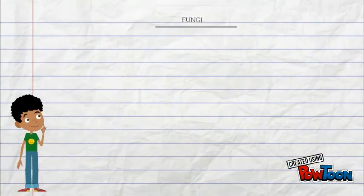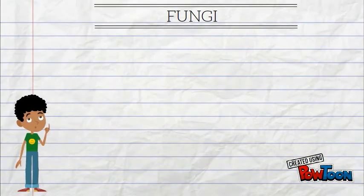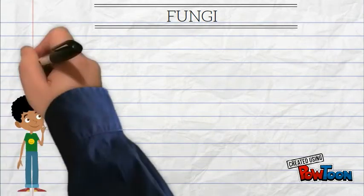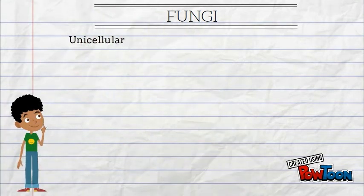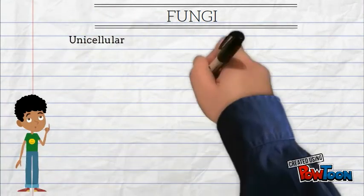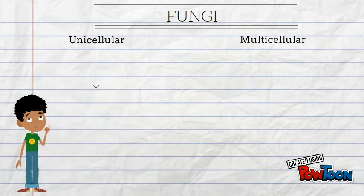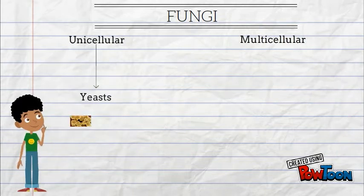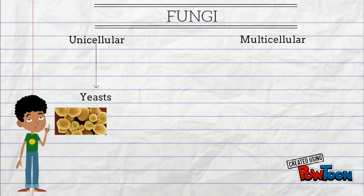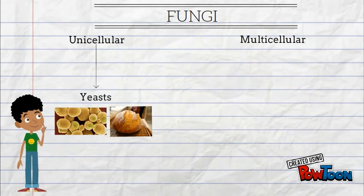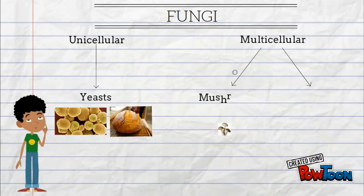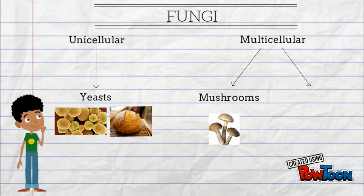Now that we found some fungi, we could study them. Fungi can be unicellular or multicellular. Unicellular fungi are yeasts, which we use to make bread. And multicellular can be mushrooms or molds.